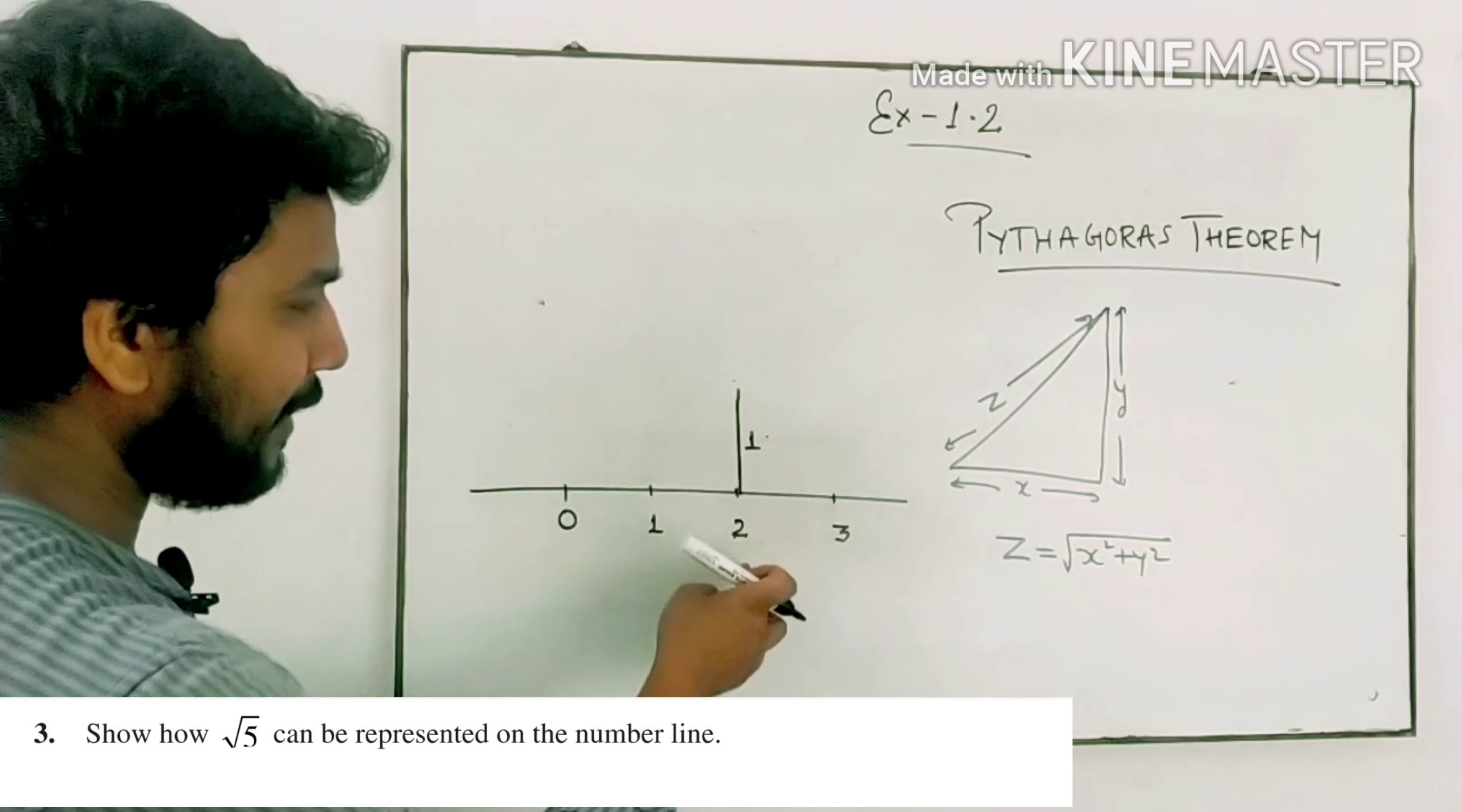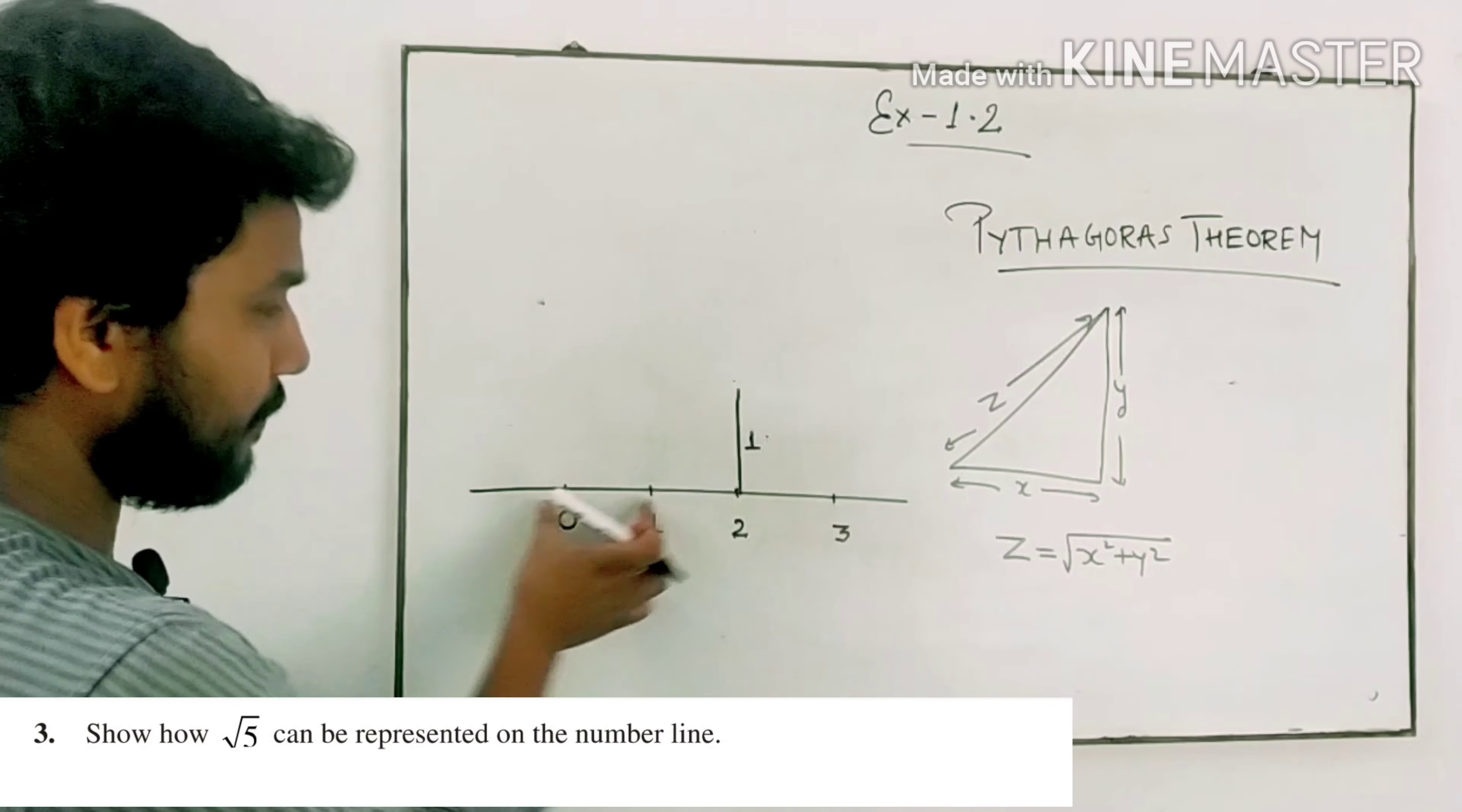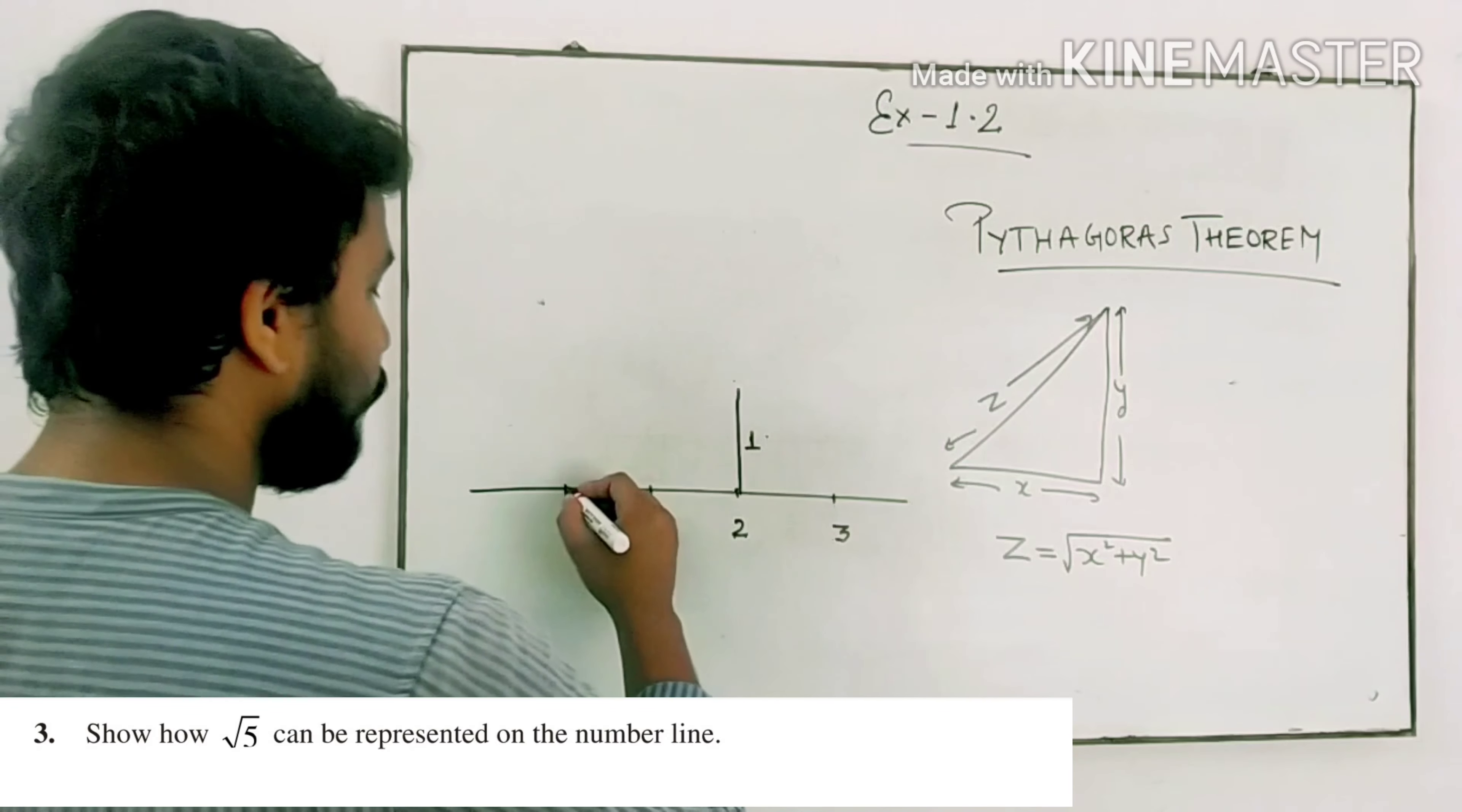At 2 on the number line, draw a perpendicular of one unit. We will draw the perpendicular and then connect it from 0.